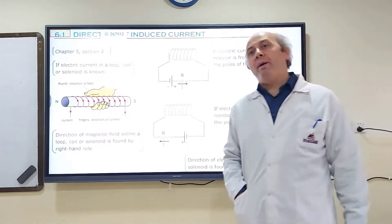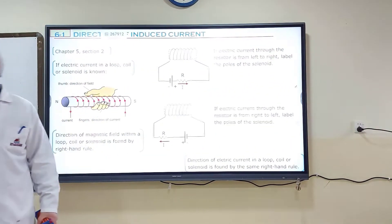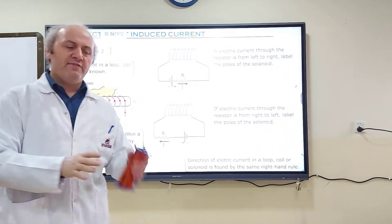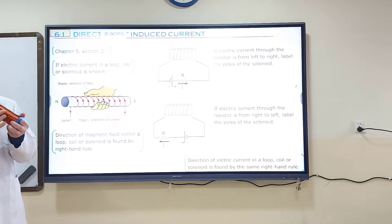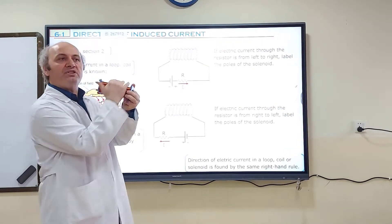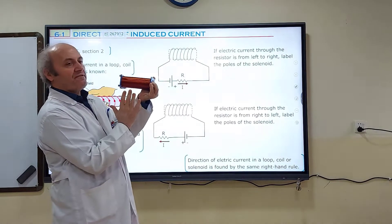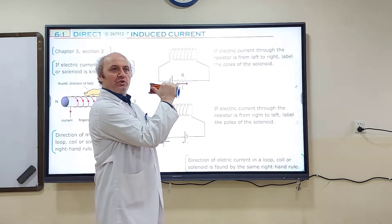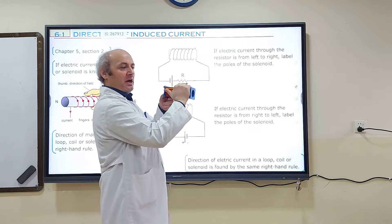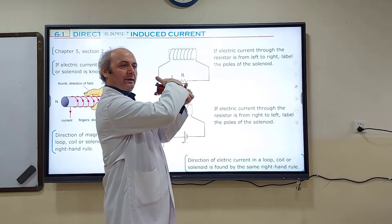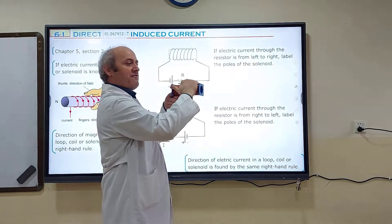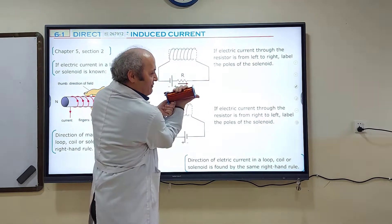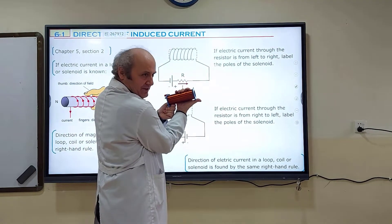Now, how can we find the direction of the electric current? We are going to use the right-hand rule. If an electric current is given to a coil, say the electric current goes from front to back — my thumb always points toward the N pole. If electric current is from front to back, the N pole is on the left side. If electric current is from back to front, the right side is the N pole.